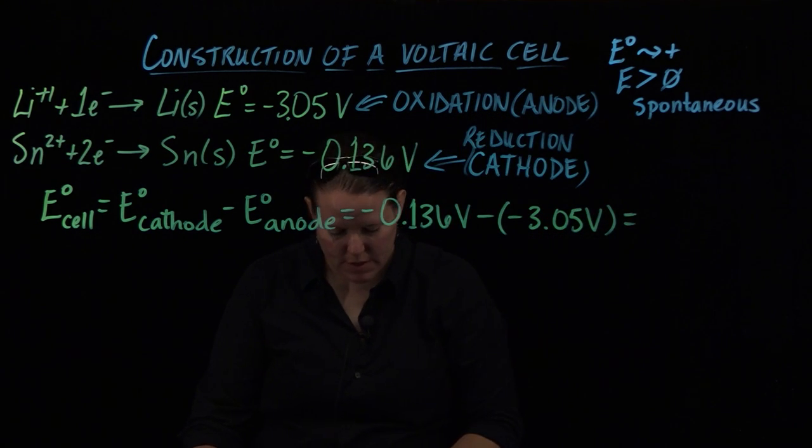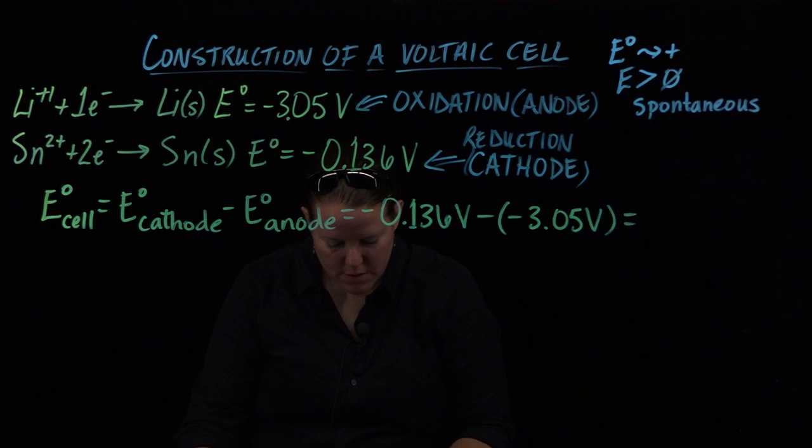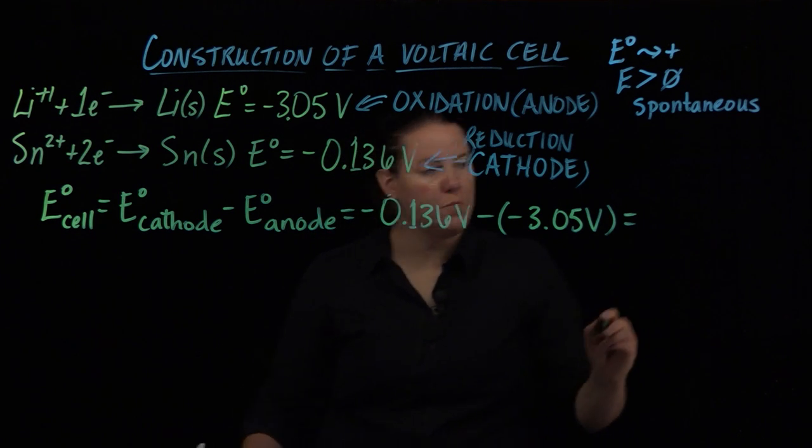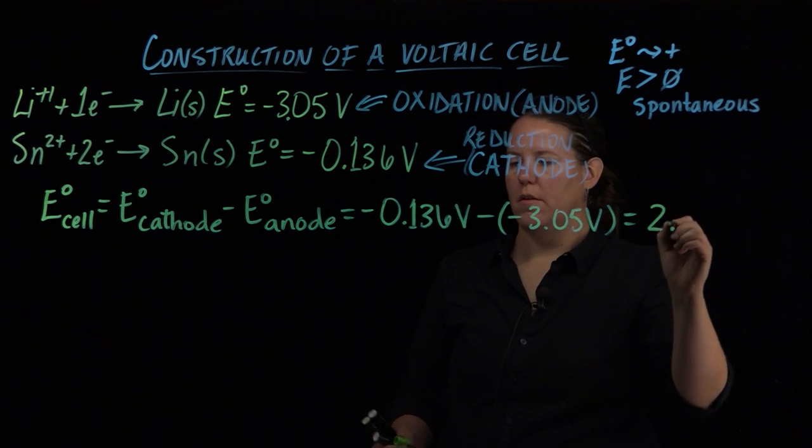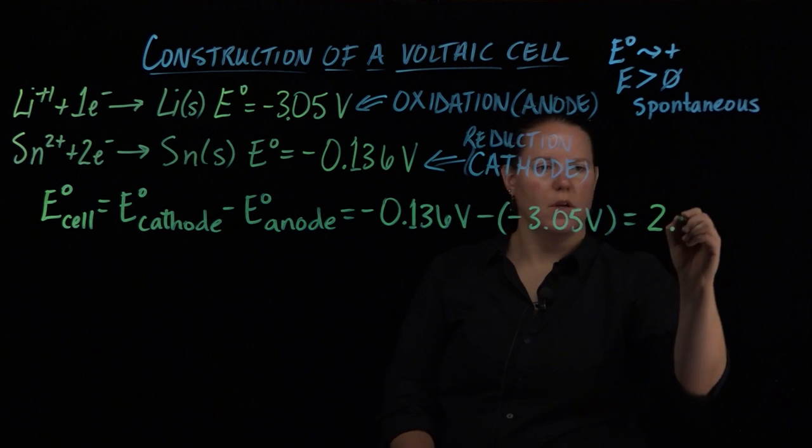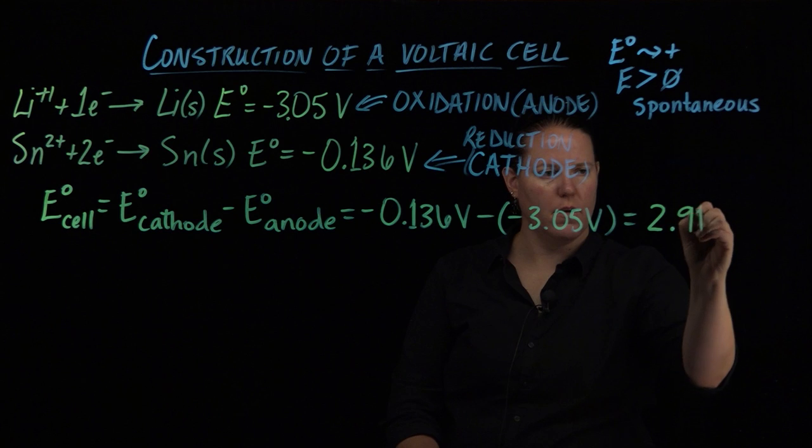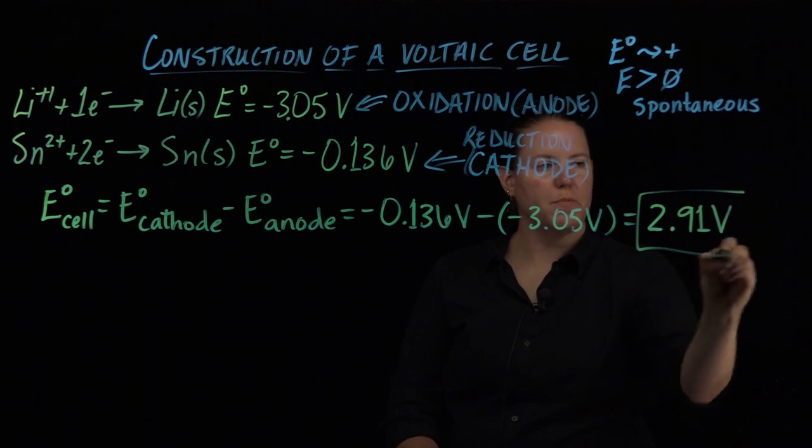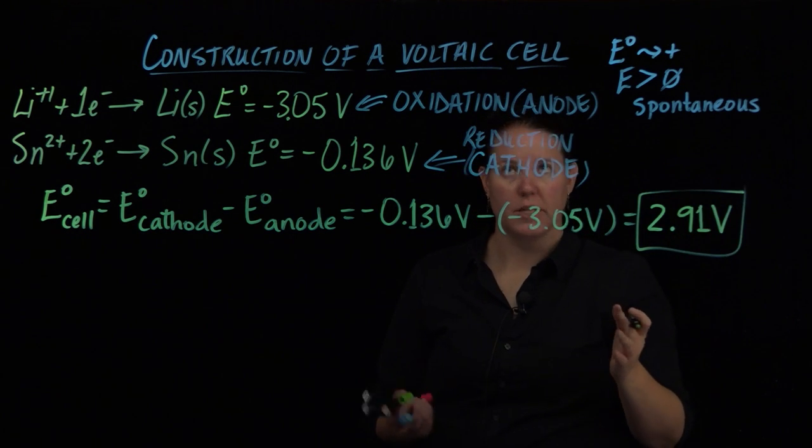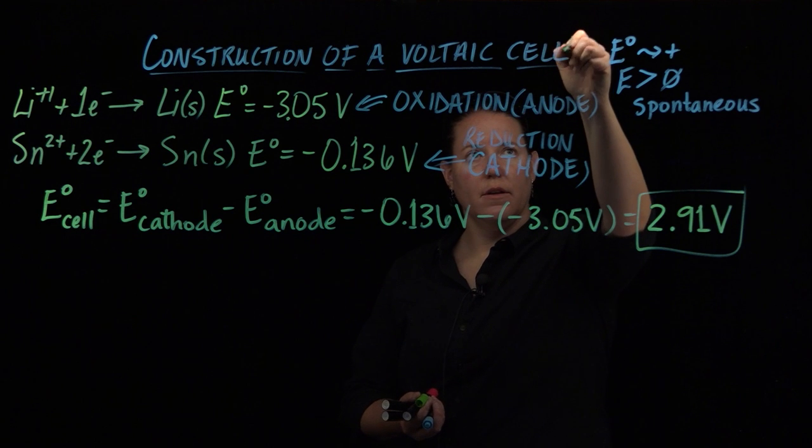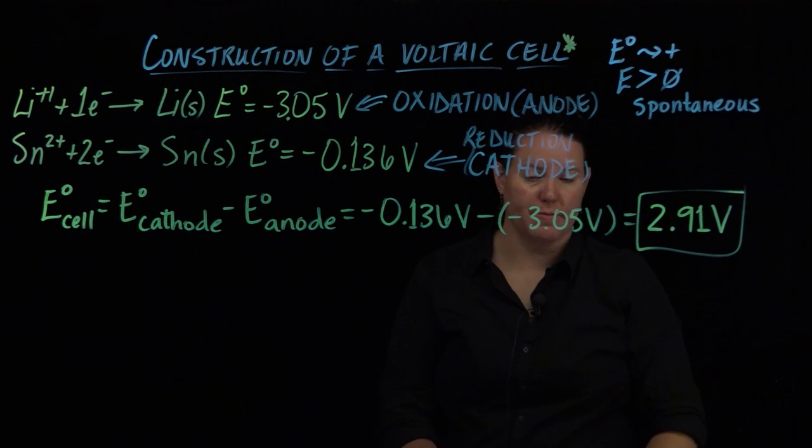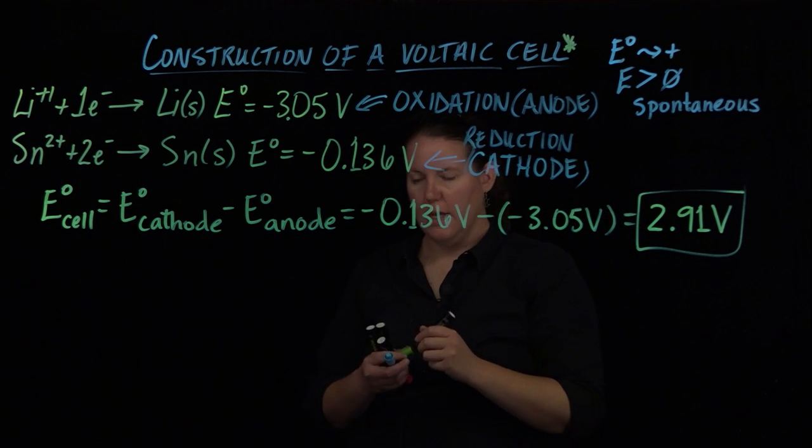It'd be negative 0.136 volts minus a negative 3.05 volts. Let me give that a moment and plug that into my calculator. And I get 2.91. I actually got 2.914, but since this has two digits to the right of the decimal point, I'm going to put 2.91 volts, which is a positive number, which means that it's a spontaneous reaction, which is exactly what a voltaic cell is showing. It needs to be spontaneous as is.